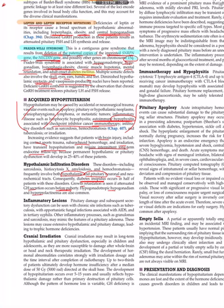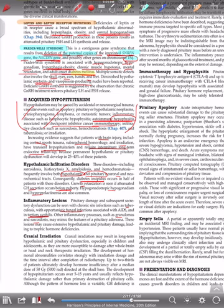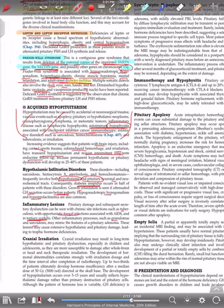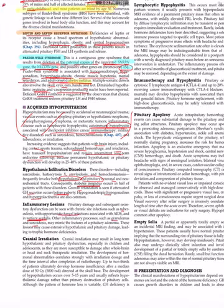Inflammatory: pituitary damage, subsequent secretory dysfunction can be seen with chronic side infection such as TB, opportunistic fungal infection associated with AIDS and tertiary syphilis. Other inflammatory processes like granuloma, sarcoidosis may mimic the features of pituitary adenoma or these may cause extensive hypothalamic pituitary damage leading to trophic hormonal deficiency. Cranial irradiation may result in long-term hypothalamic and pituitary dysfunction, especially in children and adolescents, and they are more susceptible to damage after whole brain and neck therapeutic radiation. Development of hormonal abnormalities.